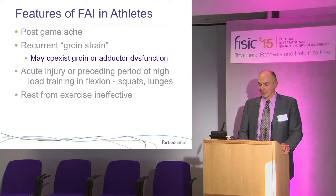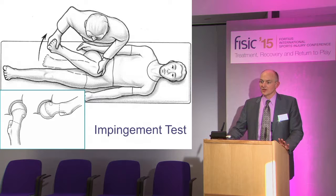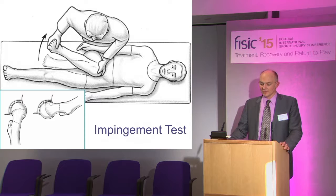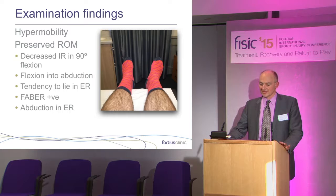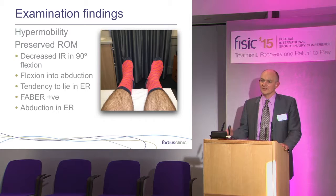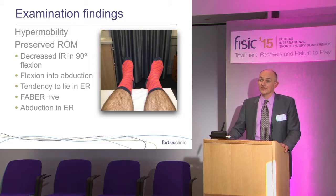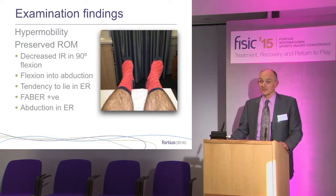We're all familiar with the impingement test, which is one of the signs of hip impingement on examination. By flexing, adducting, and internally rotating the hip, you're forcing a conflict between the femoral neck and the torn labrum, reproducing the patient's pain. But there may be more subtle findings. Patients may be hypermobile, particularly female athletes. Range of motion is usually well preserved, but there may be a reduction in internal rotation at 90 degrees of flexion. Patients with hip cam impingement particularly tend to lie with the lower limb in just slight external rotation — and you can quite often see that on examination.